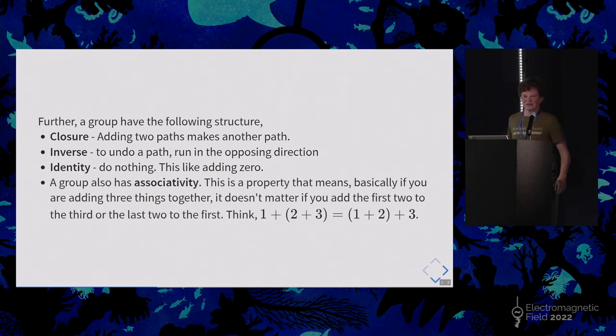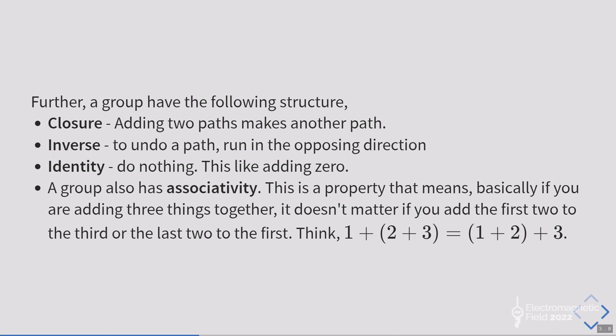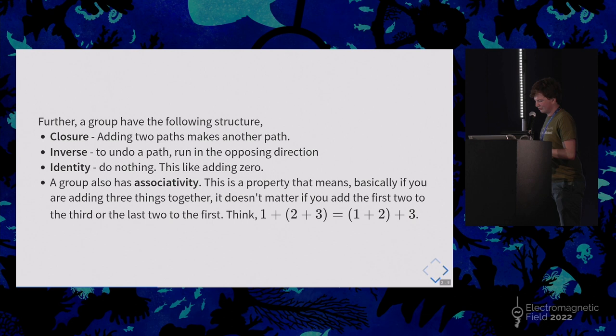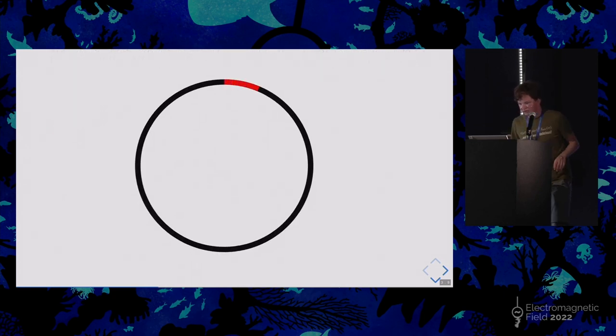So this is the complicated bit. Associativity. Very, very complicated word. So this means basically if you add three things together, it doesn't matter if you add the first two first to the third, or if you add the last two to the first. It doesn't matter. So I've got on the screen, ew, I know, a sum takes it back to school, but it doesn't matter. It's like that. Okay. Good.